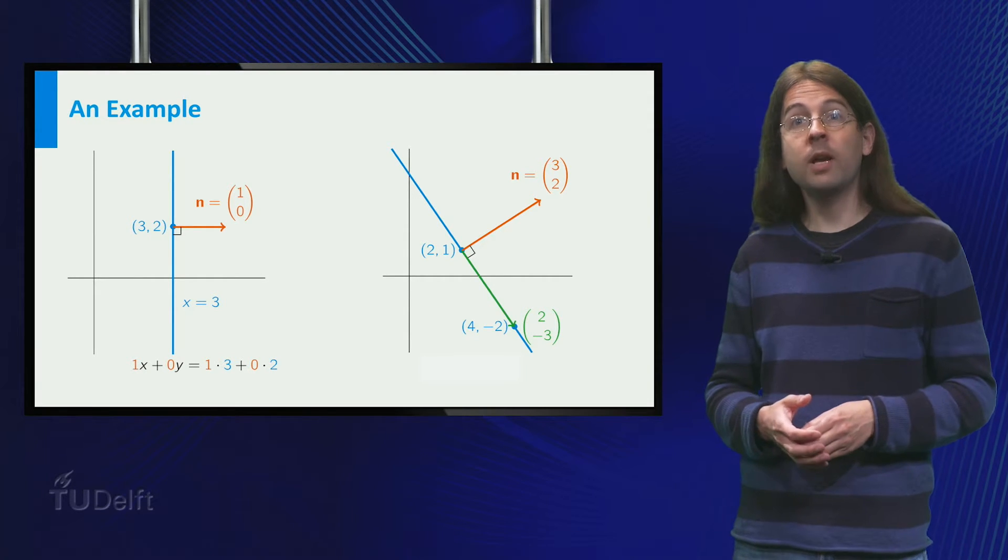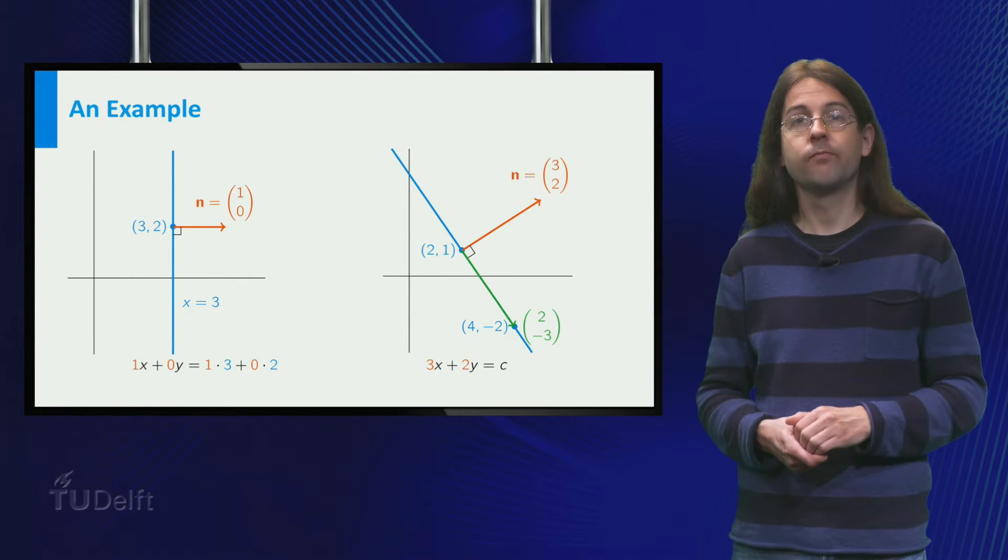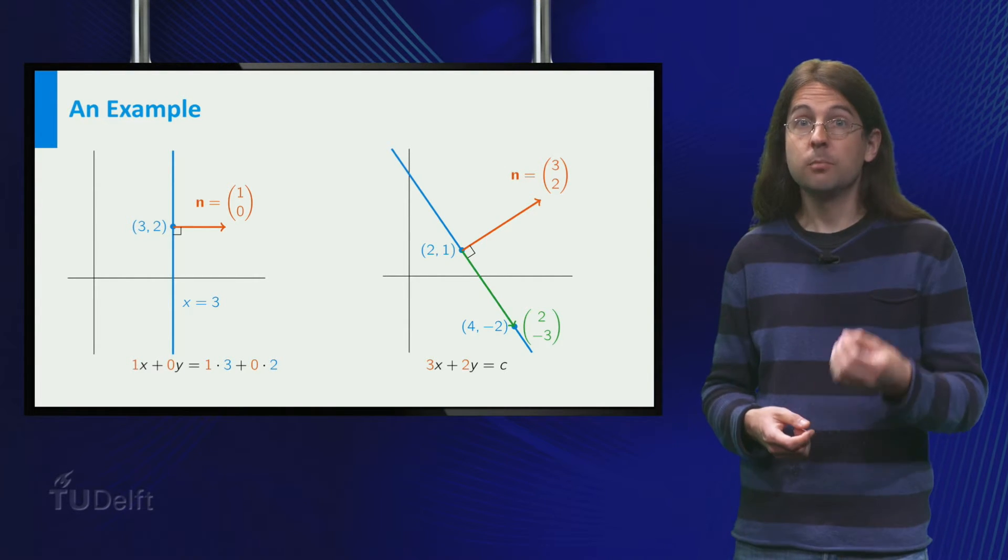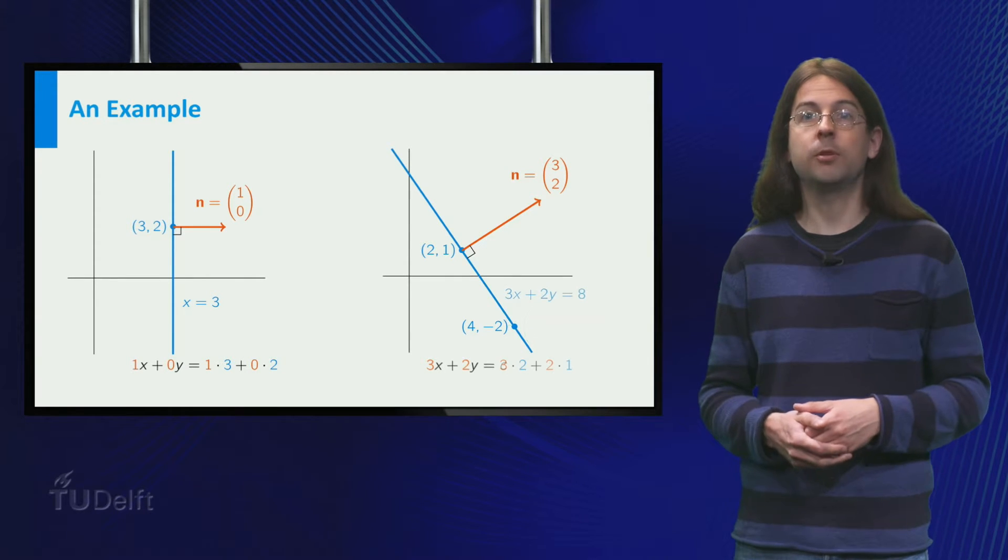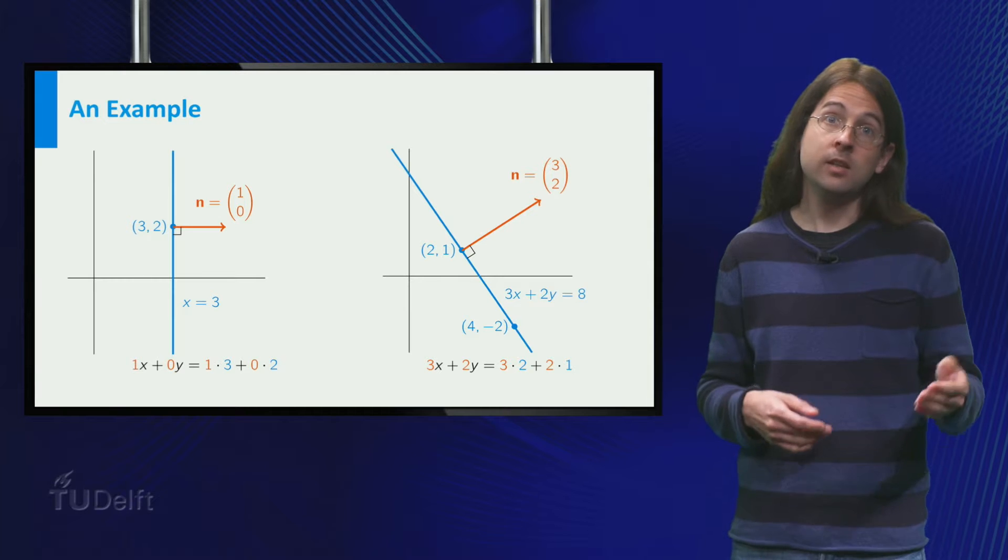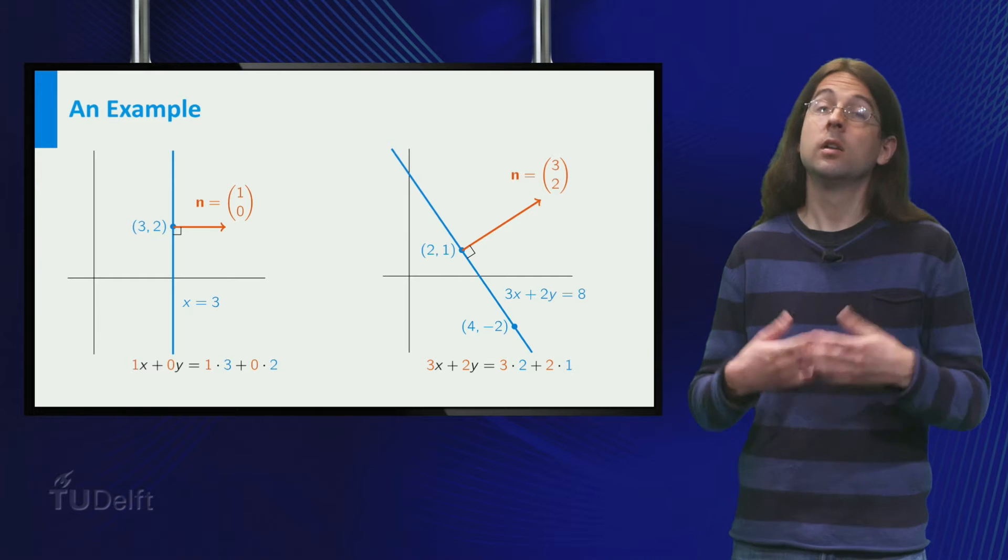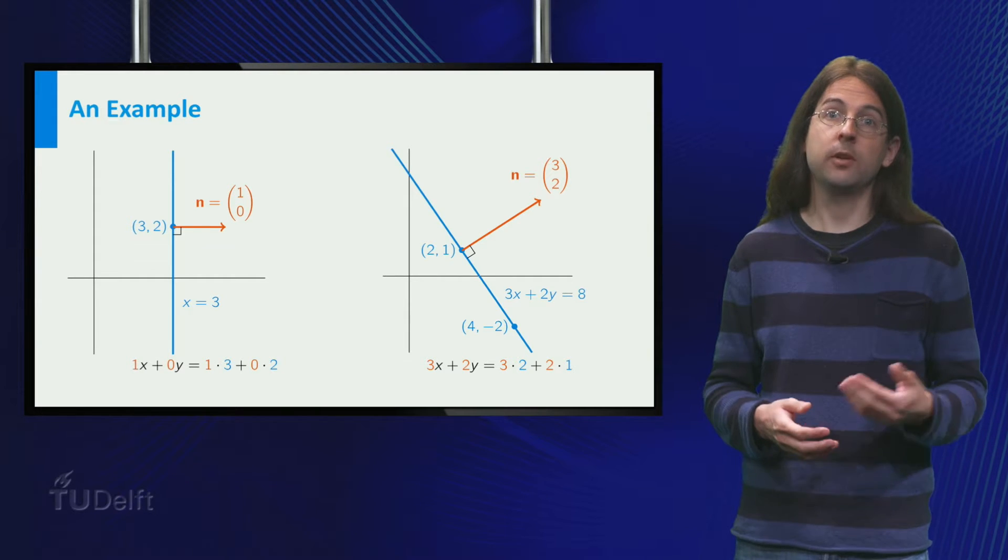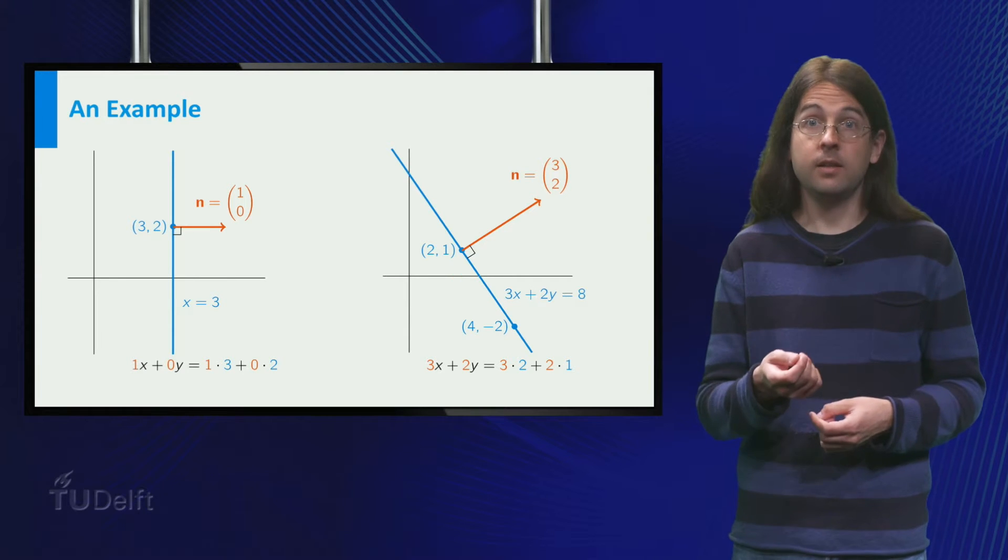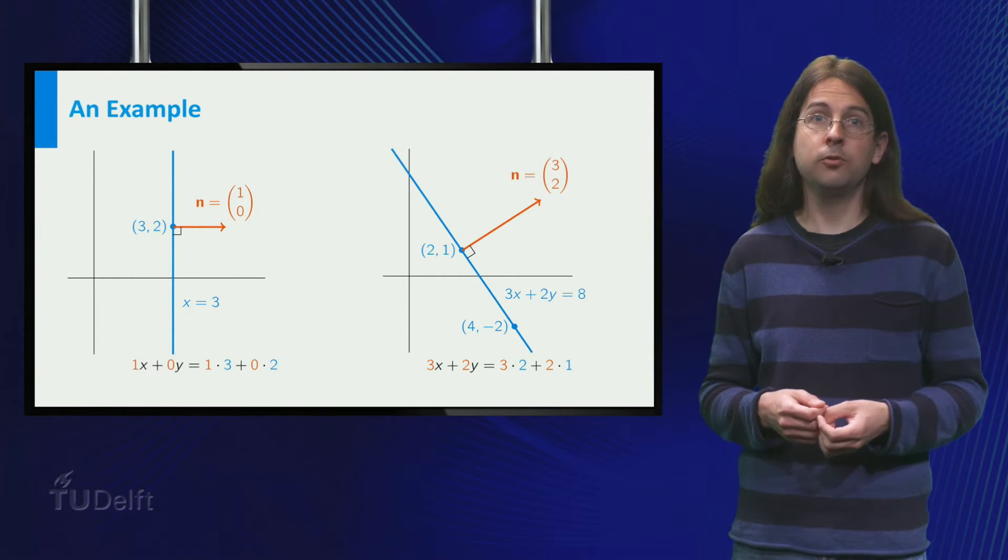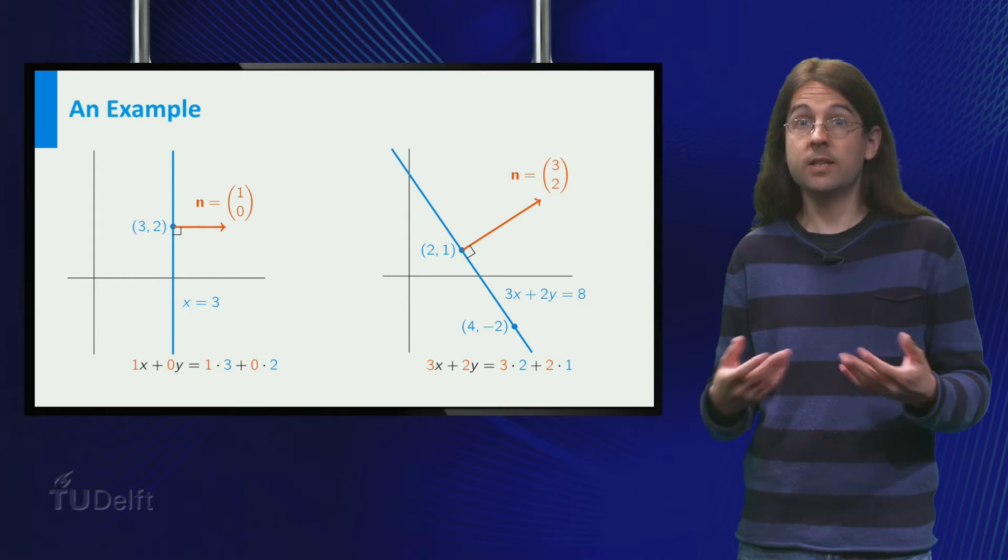Thus, the equation for the line is three x plus two y equals c. We obtain c by plugging in any point on the line, for example two comma one. So c equals three times two plus two times one equals eight. The line is thus determined by three x plus two y equals eight. And indeed, plugging in x equals four and y equals minus two gives twelve minus four is eight as well.